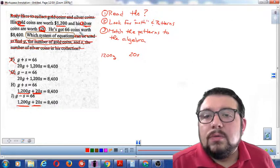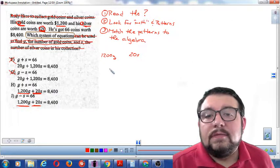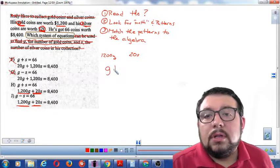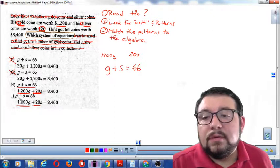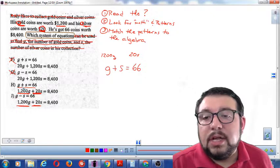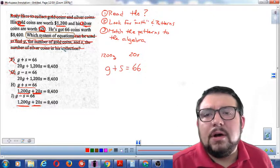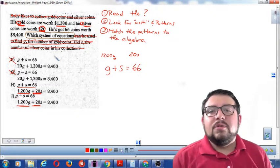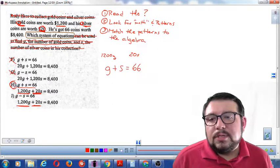He's got 66 coins worth $8,400. Okay, so if I add up his gold plus his silver, it should equal 66 coins. Gold plus silver equals 66. Okay, so we can see that this one has gold plus silver equals 66. And this one says gold minus silver equals 66. No, he has a total of 66 coins. Of course, we add the gold and the silver to make the 66. So this one makes much more sense.